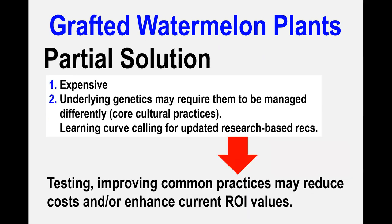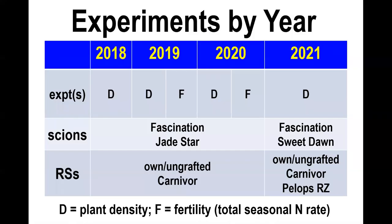These recommendations require experimentation and can alter production costs and returns on investment relative to when standard non-grafted plants are used. We completed two experiments in recent years, but today I will summarize the one focused on plant density or plant population. The other experiment explored total seasonal nitrogen rate. Experiments have been completed each year since 2008, and the scion and rootstock varieties used in each experiment are listed here.